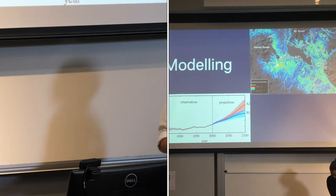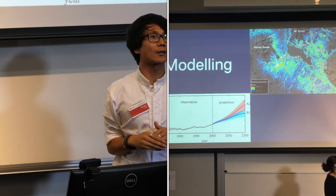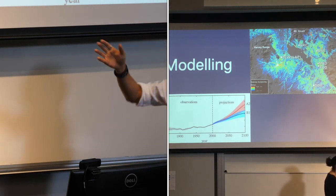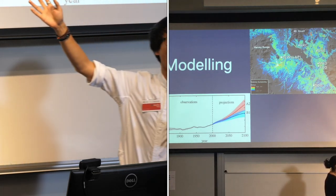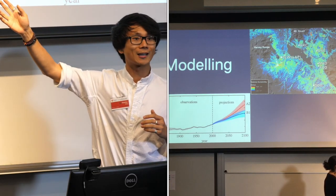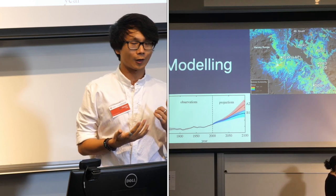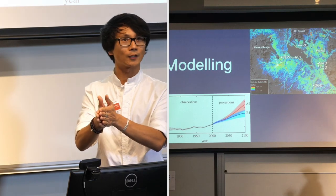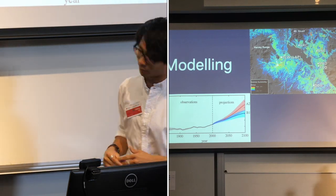Modelling is also a very important mathematical concept that we use in a lot of scientific research — like climate change prediction — and more closely, we can model habitat suitability to determine where a species can live in the near future when the environment has changed.